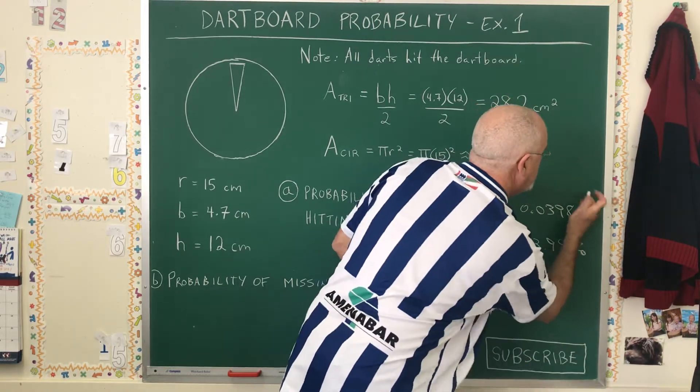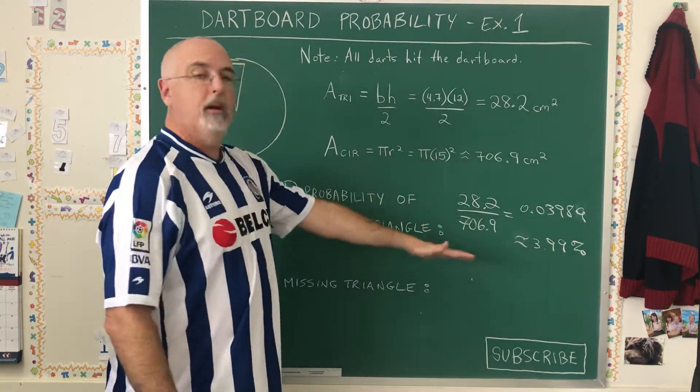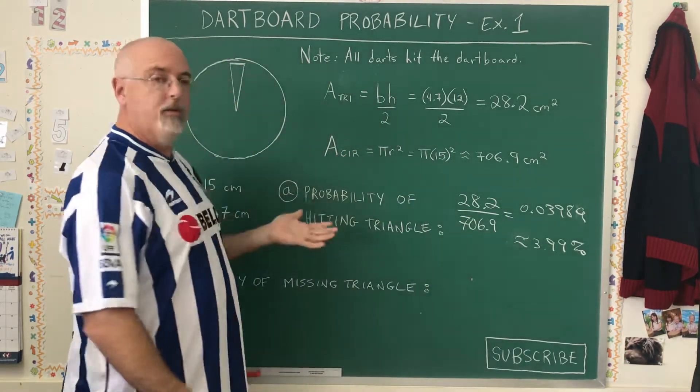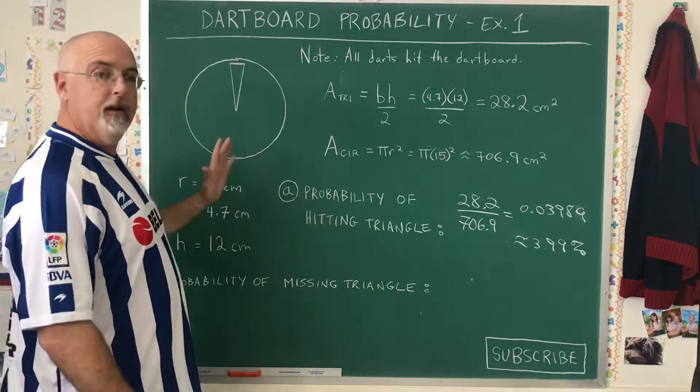This is not a 4, it's a 9. There, so we have 3.99% probability of hitting our triangle. This is how we calculate the probability in this case.